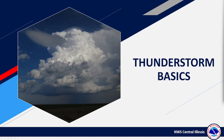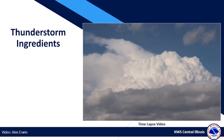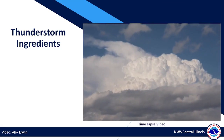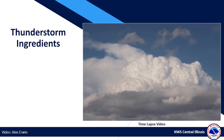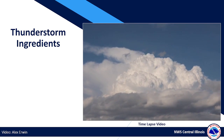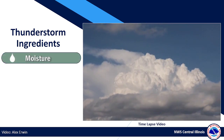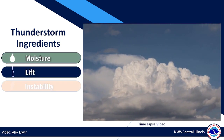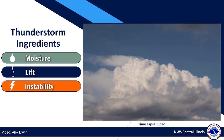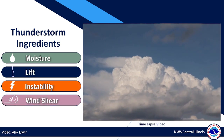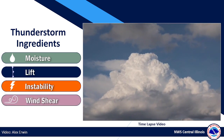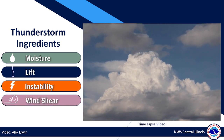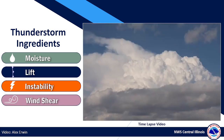In this short video, we'll talk about what goes into the development of thunderstorms. All thunderstorms have four basic ingredients: moisture, lift, instability, and wind shear. We will go into a little more detail for each of these.